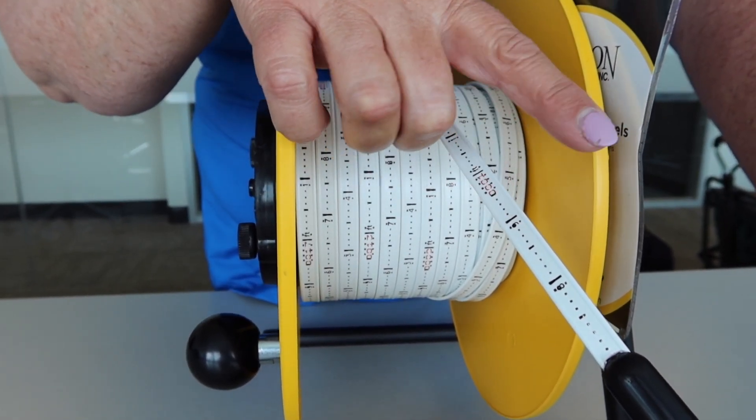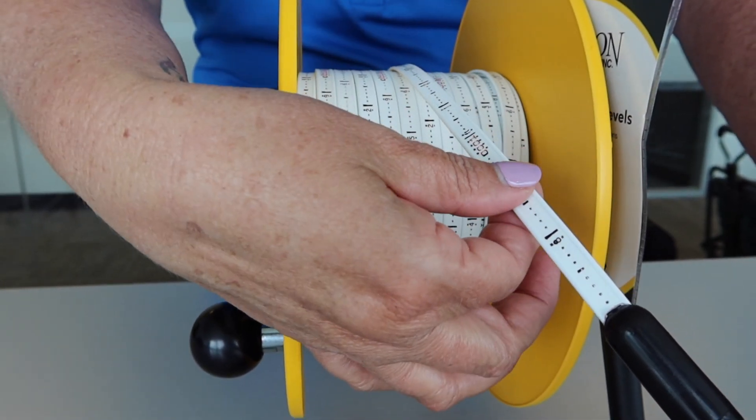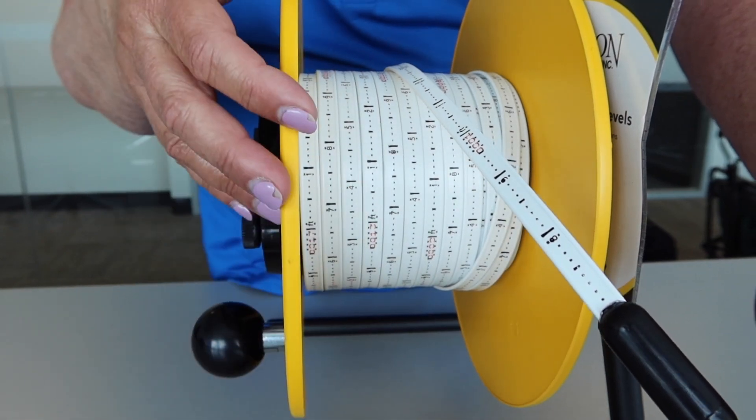The tape has a dog bone profile, meaning that it's rounded on either side and flat in the center, which helps eliminate sticking to the side of the casing.